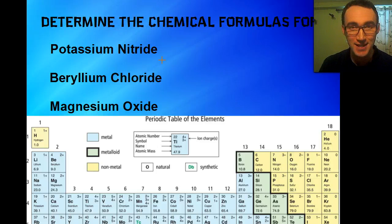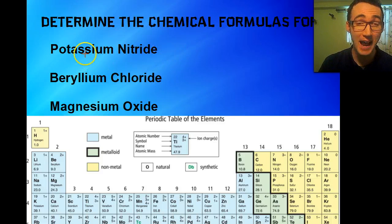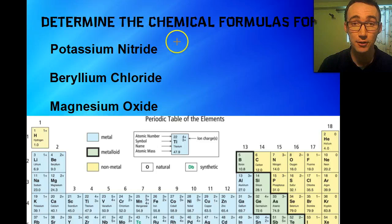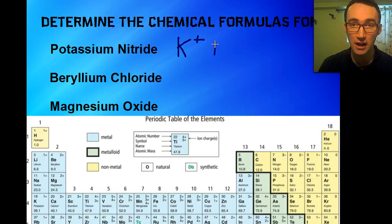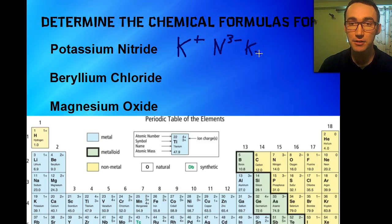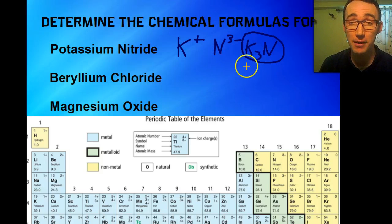Let's try some examples. The first one is potassium nitride. Potassium's symbol is K, and it has a charge of plus one because it's in the first group. Nitrogen has a charge of negative three. Crossing them over, the final answer is K3N. The formula for potassium nitride is the only way those two elements can come together and form a compound. Next is beryllium chloride — beryllium is in the second group with a charge of plus two, and chlorine has a charge of negative one, so the formula is BeCl2.